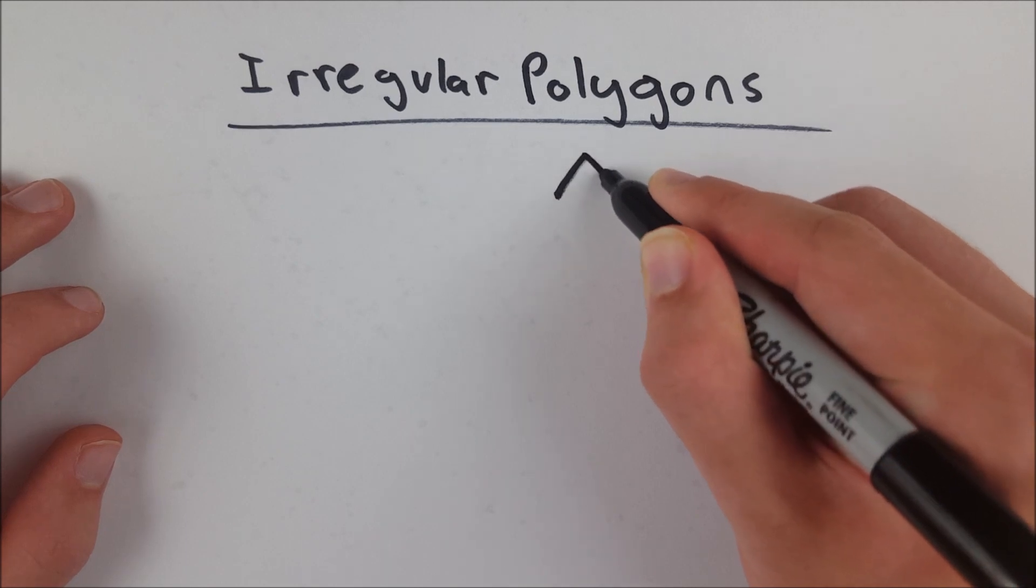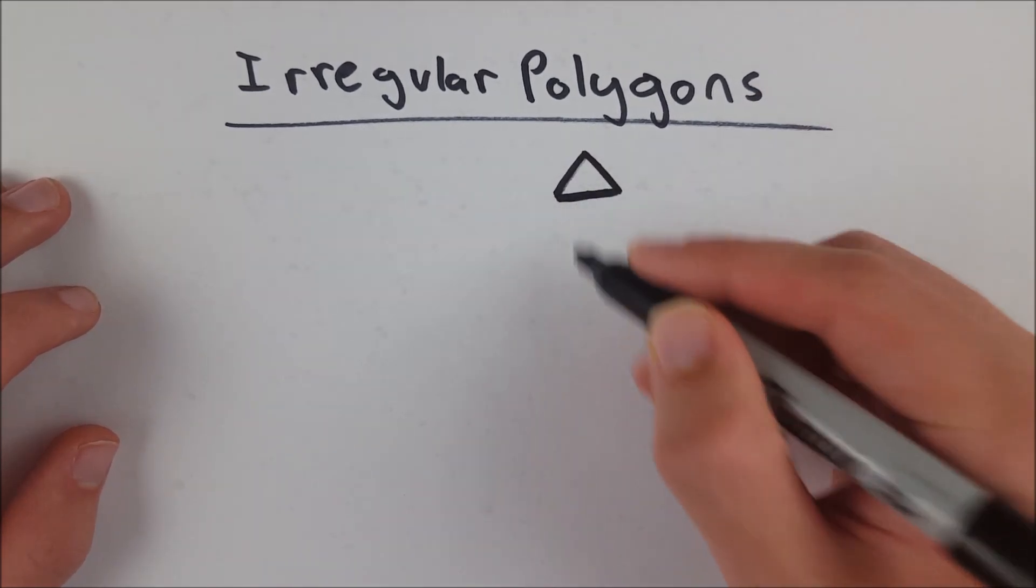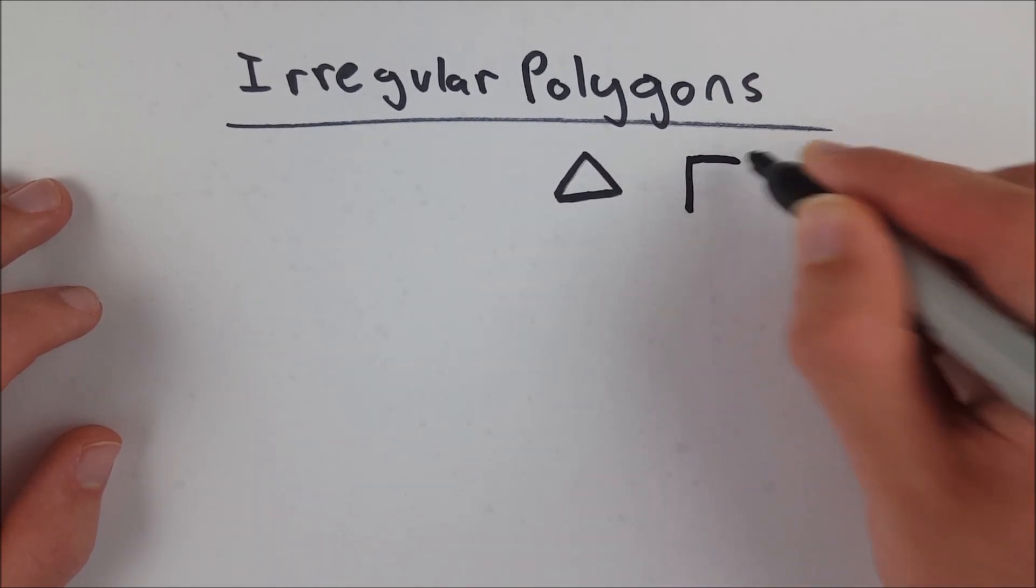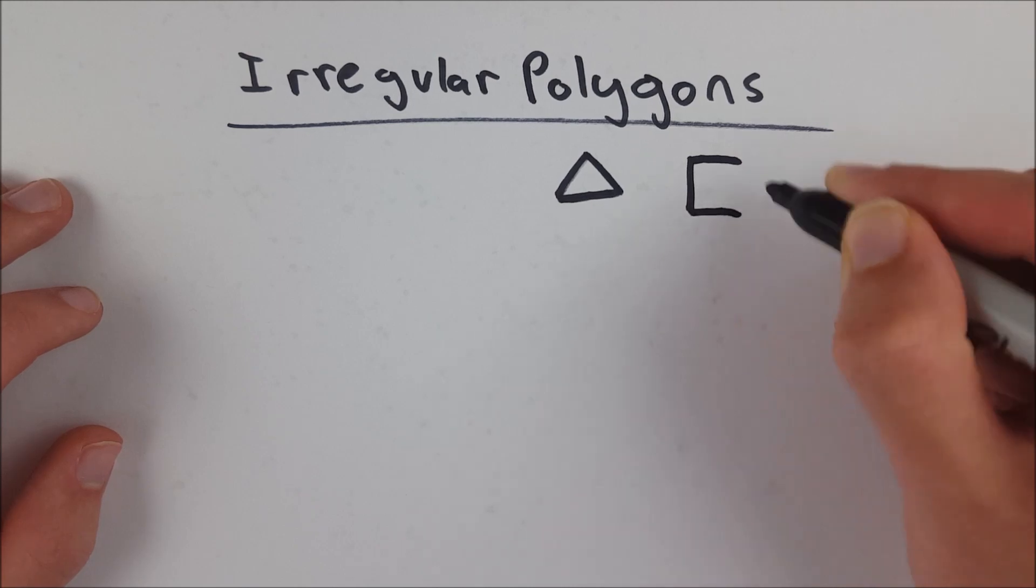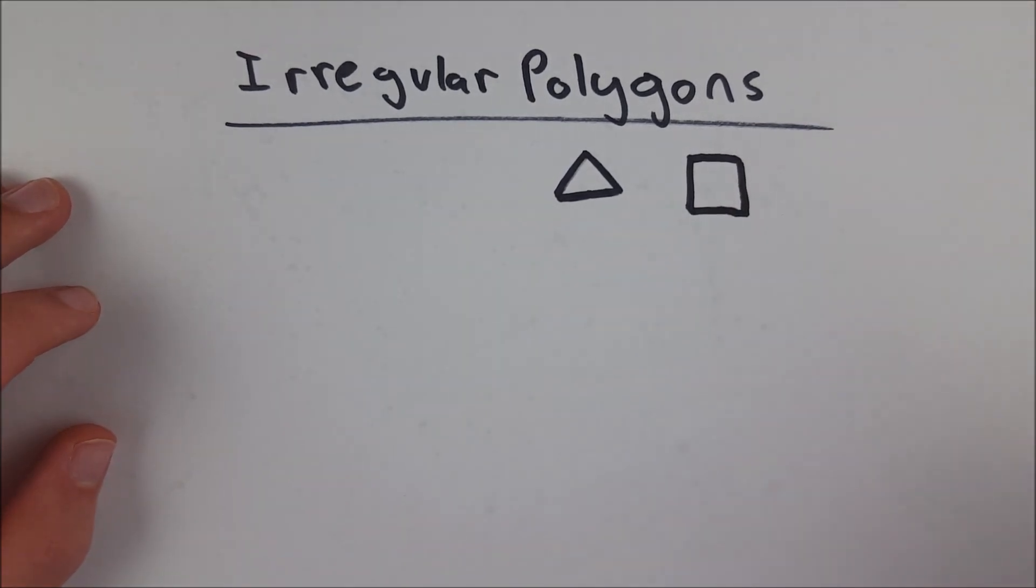So for example, a regular triangle might look something like this, and every side is congruent and every angle is congruent. A square is a shape that is always regular because all of its sides are equal and all of its angles are equal. They happen to be 90 degrees.